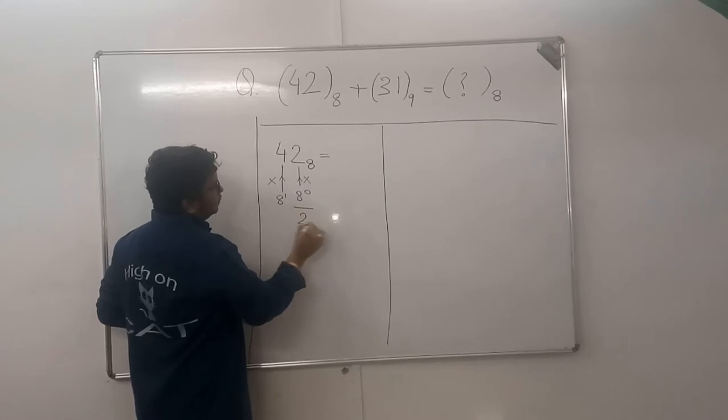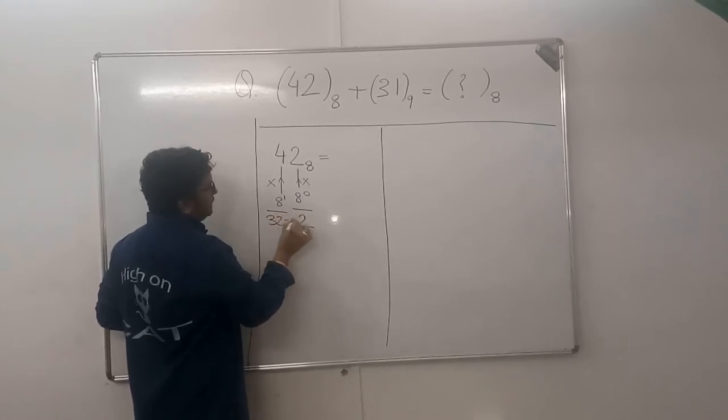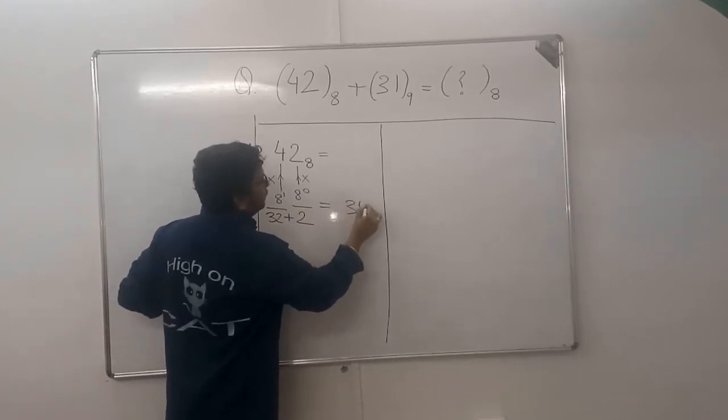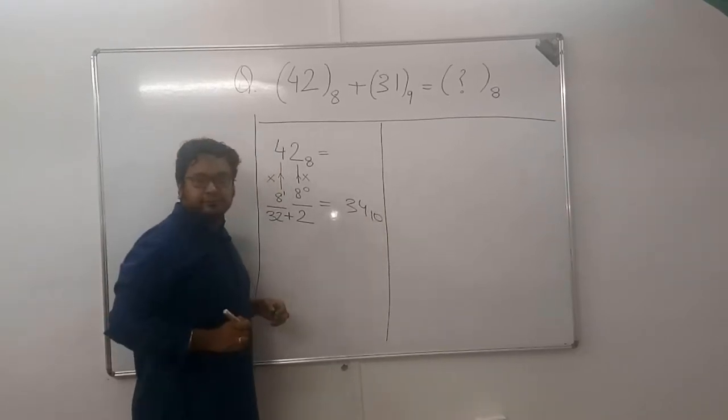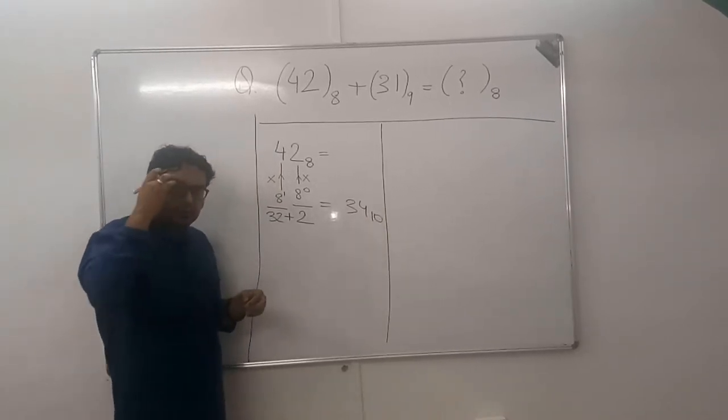See, it is 2, this one is 32. When you add the 2, you get 34 in base 10. This is how you convert to base 10.